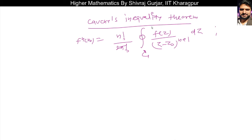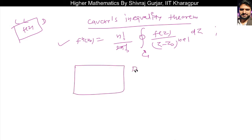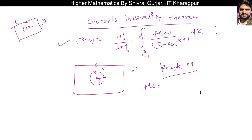Coaches' (Cauchy's) Inequality Theorem — we know this from the concept of derivatives of analytic functions. It is valid when f(z) is analytic in a given domain D, which has boundary C. We have domain D, and within it we take a circle of radius rho, calling this curve gamma. If the modulus of f(z) is always less than M on the boundary of this circle, then by Cauchy's Inequality Theorem, the modulus of the nth derivative f^(n)(z₀) is always less than or equal to M times rho^n times n factorial.